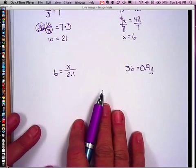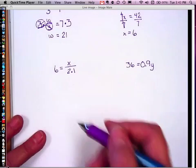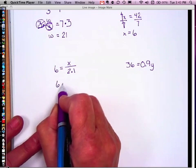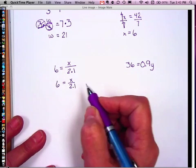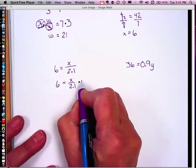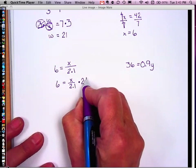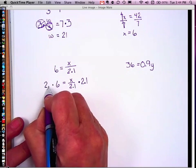On our third problem, we have 6 is equal to x divided by 2.1. So again, since I'm dividing by 2 and 1 tenth, I'm going to want to undo the division by multiplying. So I'm going to multiply both sides by 2 and 1 tenth.